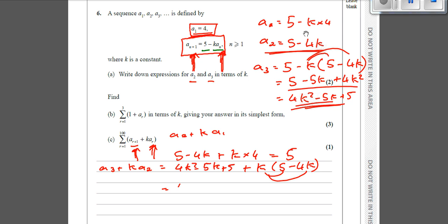you're going to get 4k squared minus 5k plus 5, plus 5k minus 4k squared. So 4k squared minus 4k squared disappears. Minus 5k plus 5k disappears. Leaving you again with 5.